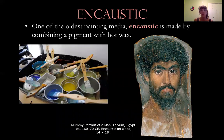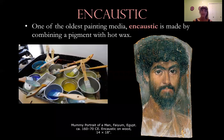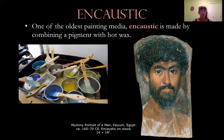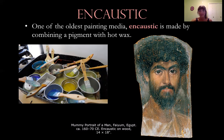Let's start with encaustic. Encaustic is one of the oldest forms of painting. It's basically made out of pigment combined with hot wax. You know that when wax is hot, it's melty and liquidy and it flows, versus when it's cold it's going to be hard and less malleable. Because of this, artists have to work relatively fast with the encaustic media because it dries pretty quickly. When you blow a candle out, it doesn't take long for the wax to harden.